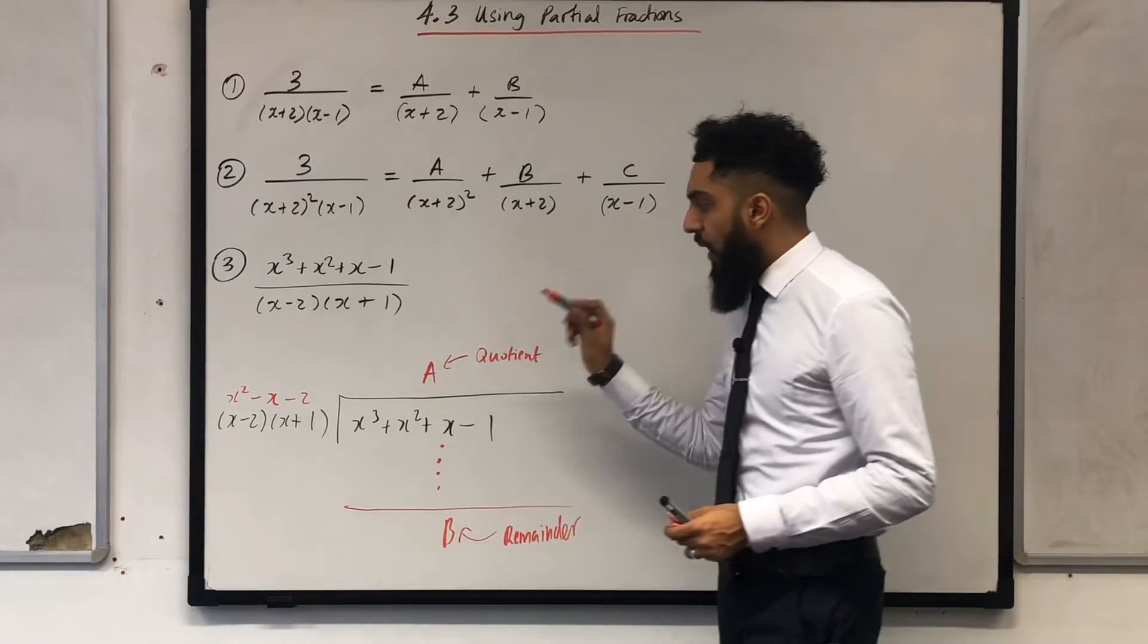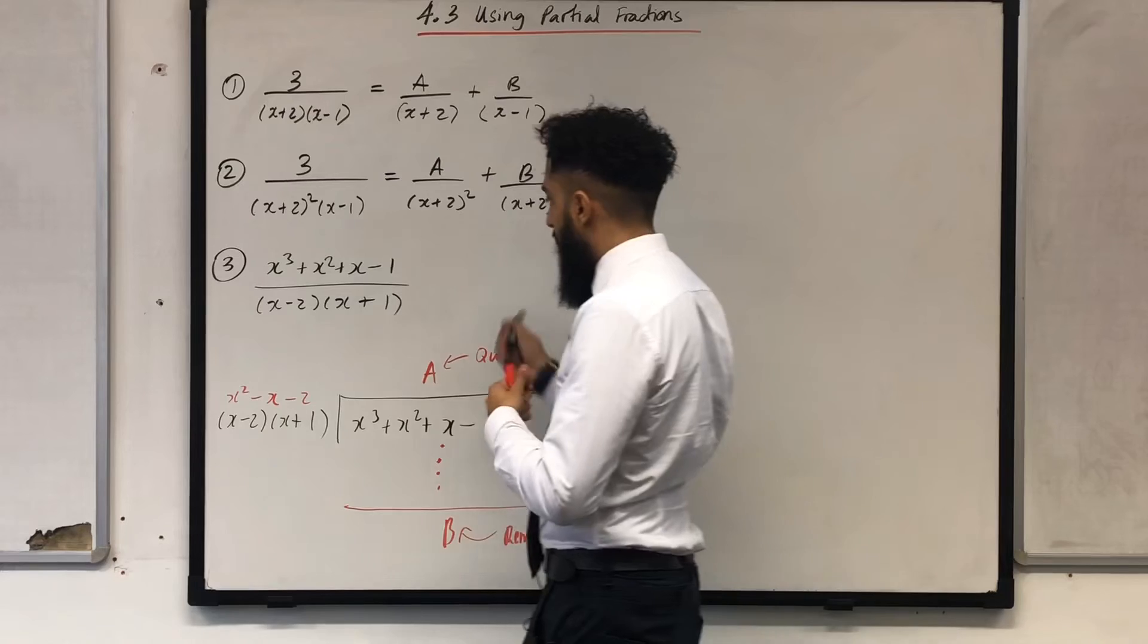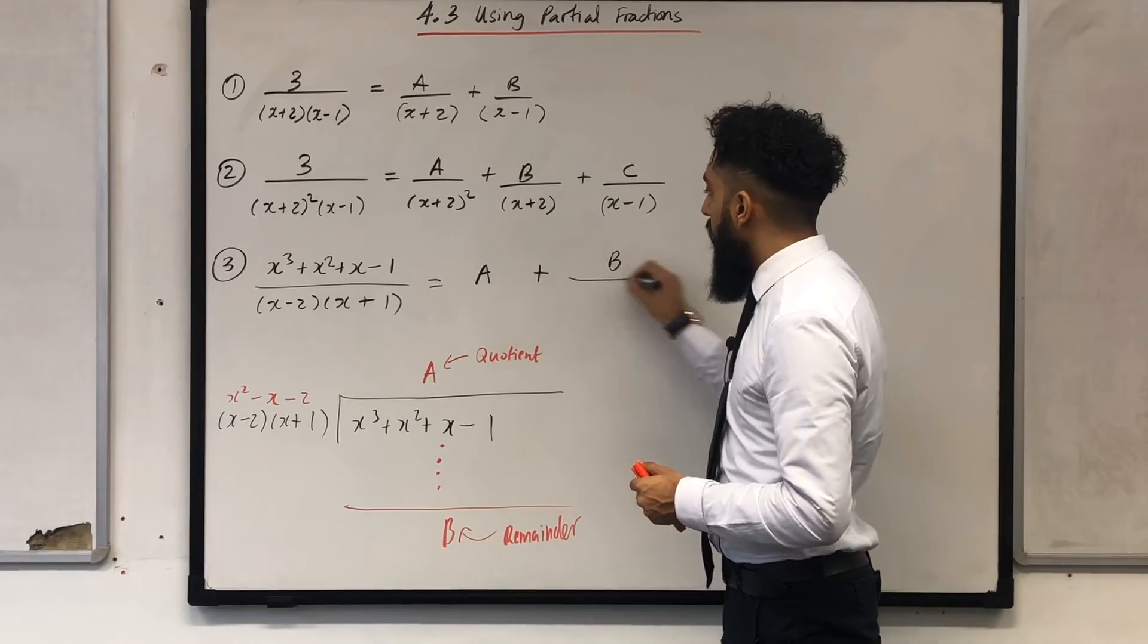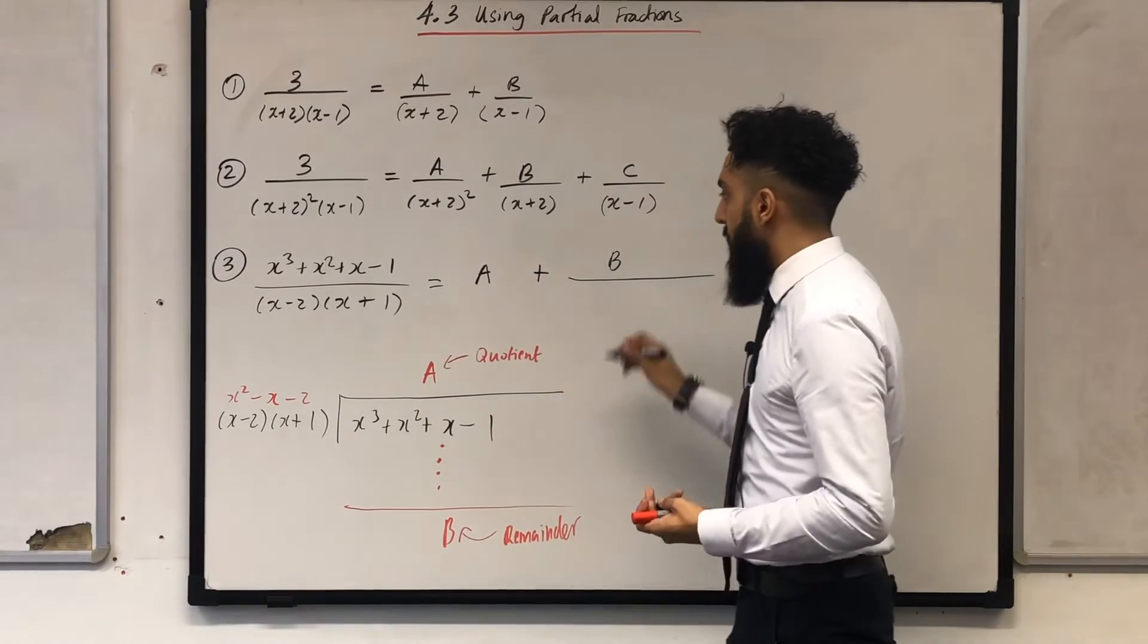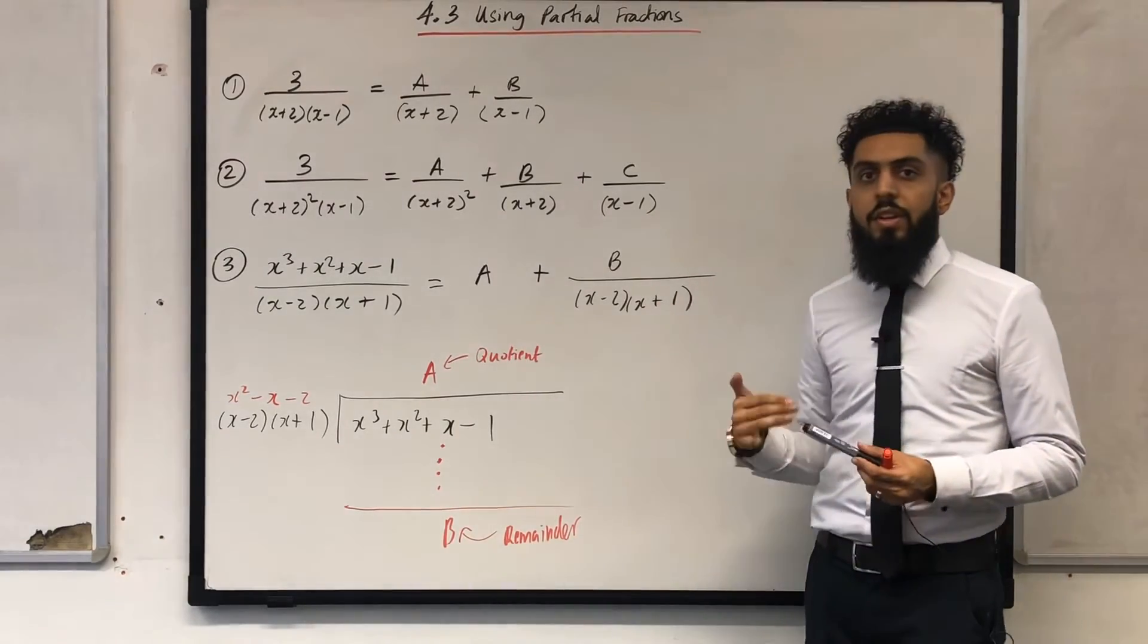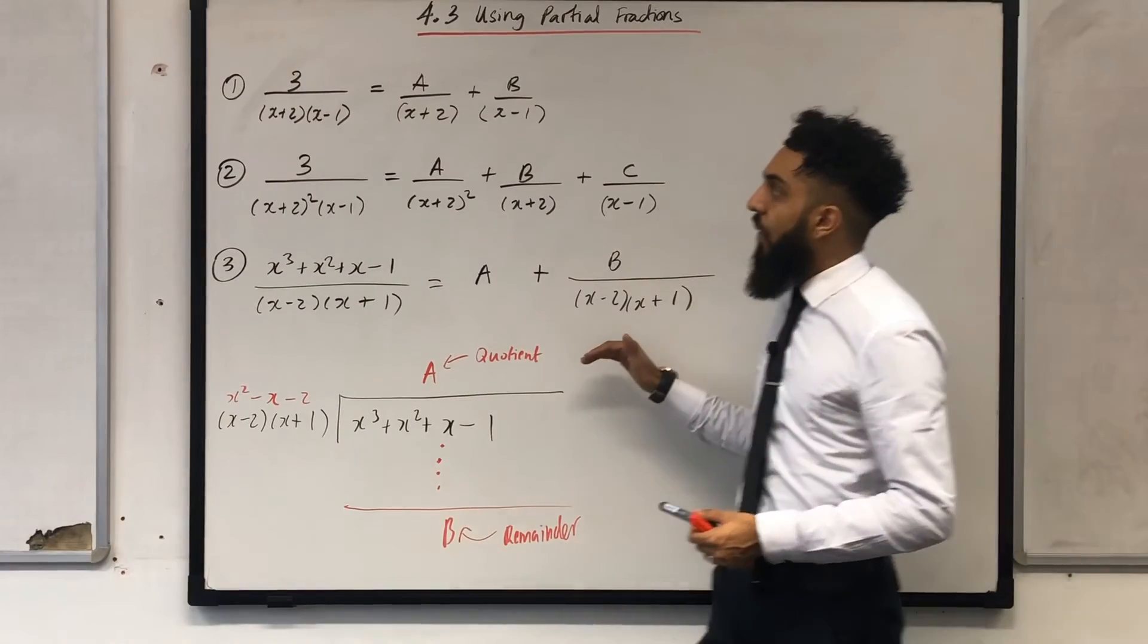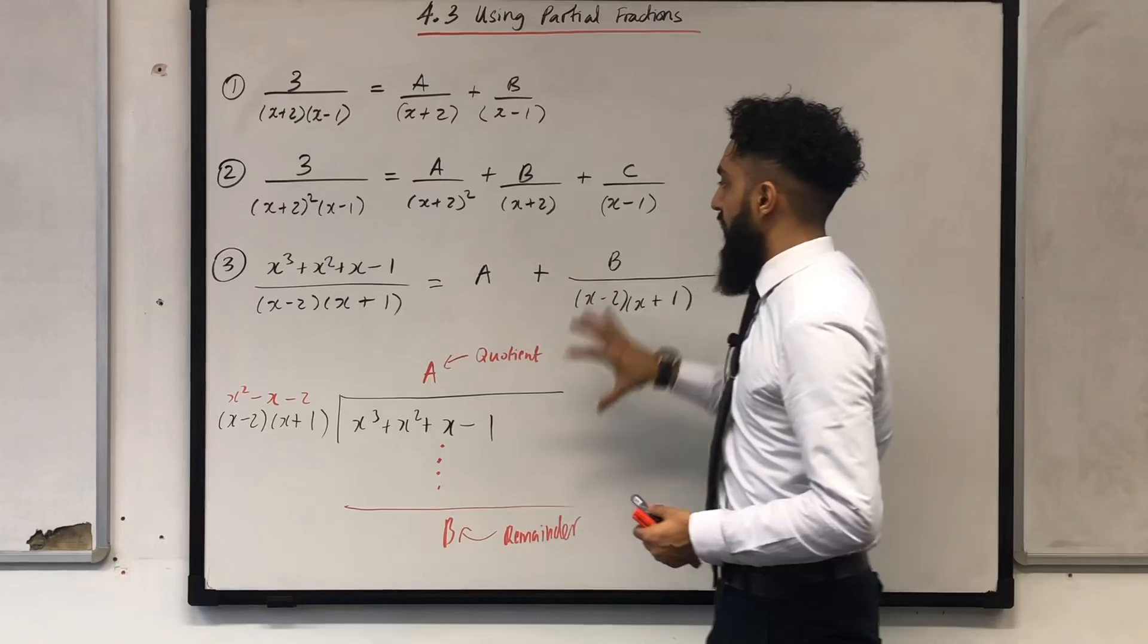Once you've worked out A and B you can actually write the following. This particular fraction is equal to A which is my quotient plus B which is my remainder all over the divisor which is x minus 2 x plus 1 both of them in brackets. And then what you can do now is take this a step further and split this over here into partial fractions using the form that we have in number 1.